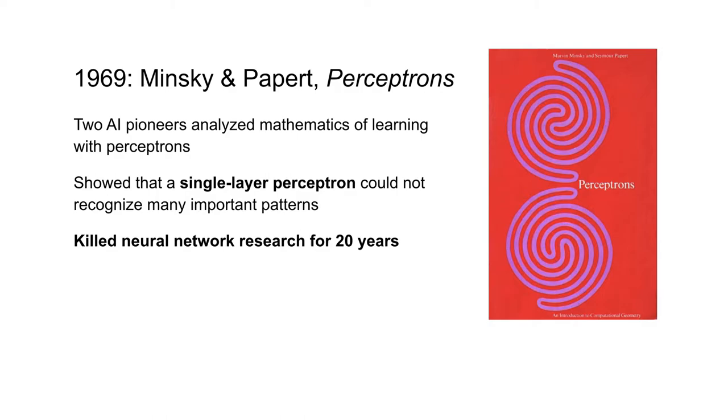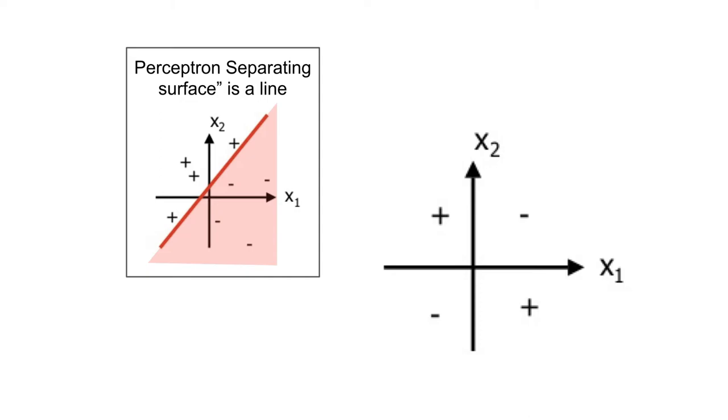An important development in the field of neural network research happened in 1969, when two AI pioneers, Minsky and Papert, published a book called The Perceptrons. They were very interested in the idea that Frank Rosenblatt proposed, and so they did a lot of mathematical and theoretical analysis of the perceptron. However, one result that they proved essentially killed neural network research for 20 years. And what they proved was that the kind of perceptron that we saw in previous slide could not learn to recognize certain kinds of patterns.